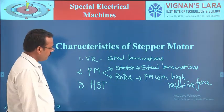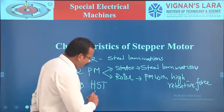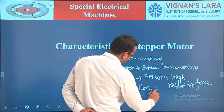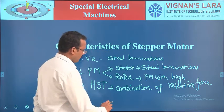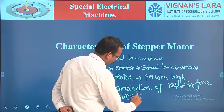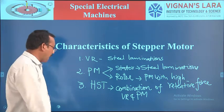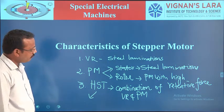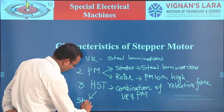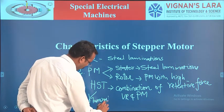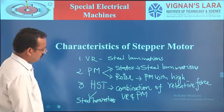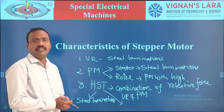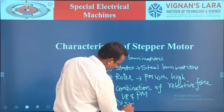The next one is the hybrid stepper motor. The hybrid stepper motor is a combination of the VR stepper motor and the permanent magnet stepper motor. The stator is made up of steel lamination, and the rotor is made up of steel with an axially mounted permanent magnet material.